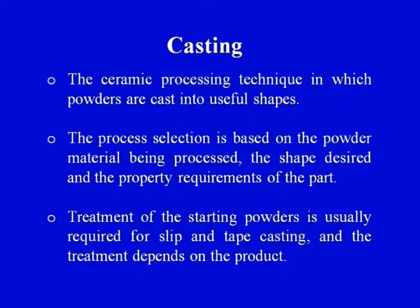This particular process falls under the third stage of ceramic parts processing — stage one is preparation of ceramic powder, stage two is mixing with additives to impart certain special characteristics, and stage three is the shaping, drying, and firing. Now we are discussing how to give a shape to the ceramic powders. Casting is one of the important techniques. The process selection is based on the powder material being processed, the shape desired, and the property requirements of the final part.